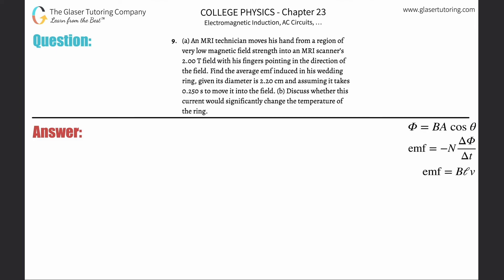Number nine, letter A. An MRI technician moves his hand from a region of very low magnetic field strength to an MRI scanner's 2 Tesla field, with his fingers pointing in the direction of the field. Find the average EMF induced in his wedding ring given its diameter is 2.2 centimeters and assuming it takes 0.25 seconds to move it into the field.